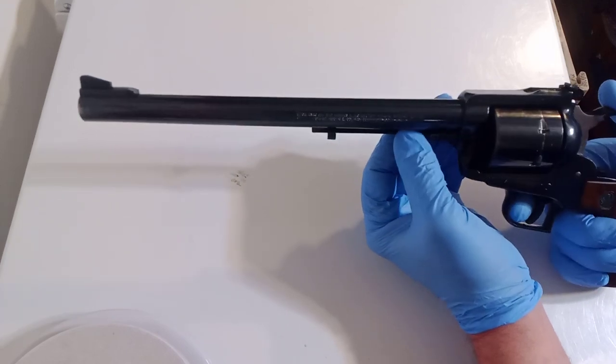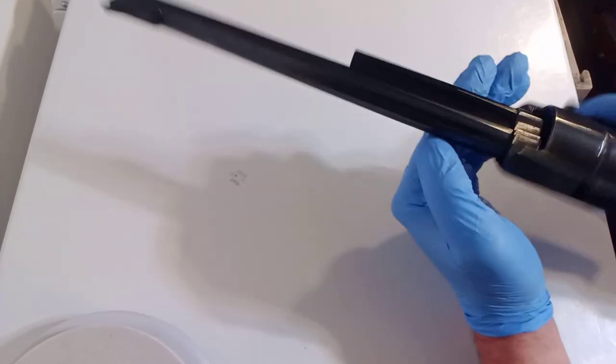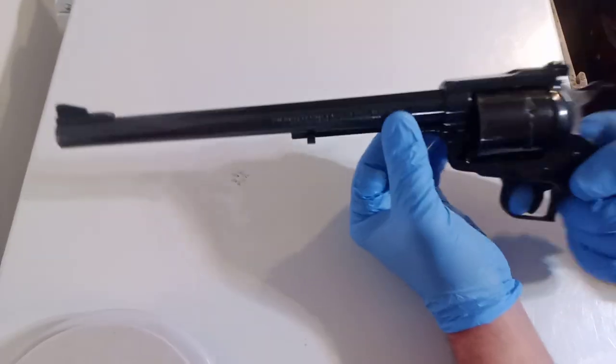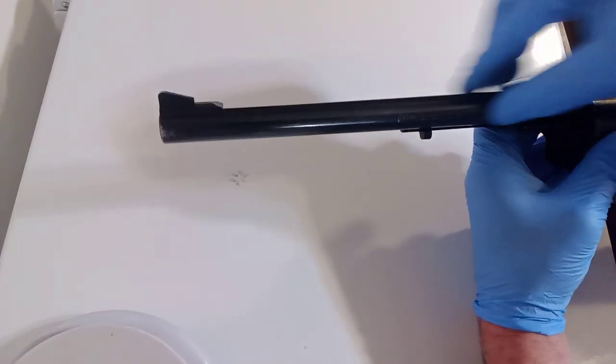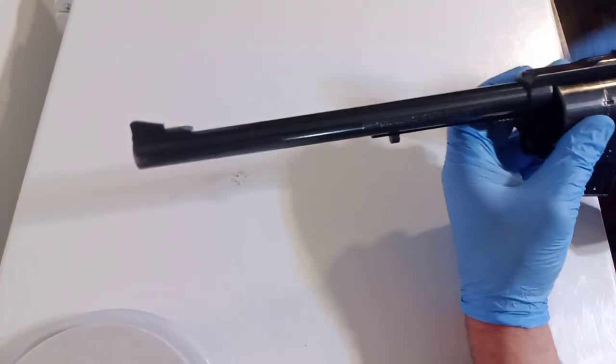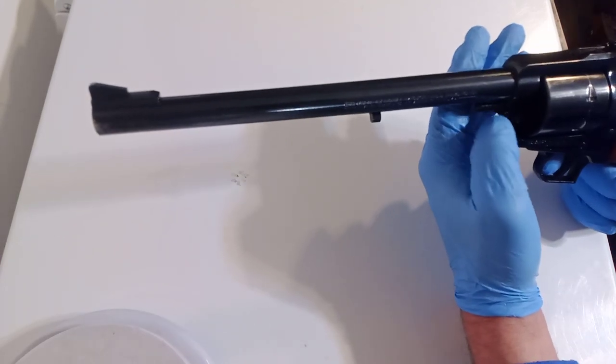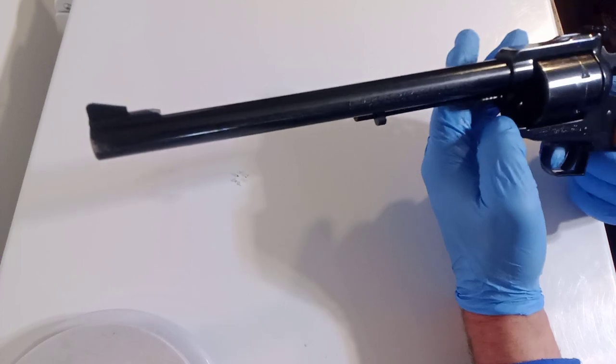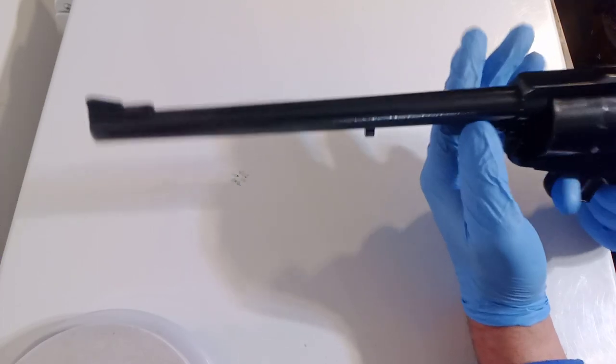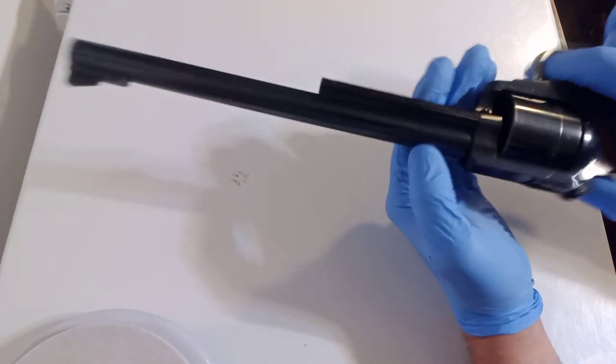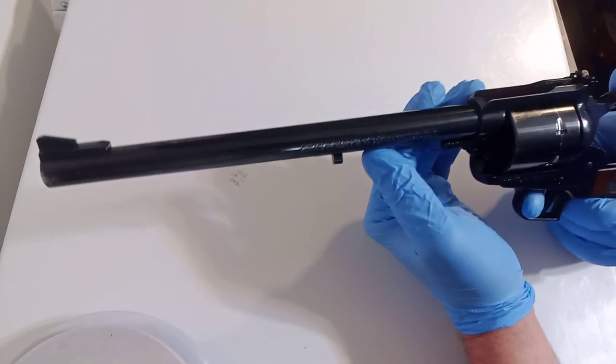this is a Ruger Super Blackhawk. See how it's black? And the barrel is super long. That's where the name comes from. This is a 10.5 inch barrel. It's chambered in .44 Magnum, which until the introduction of the 10mm was the most powerful handgun in the world.